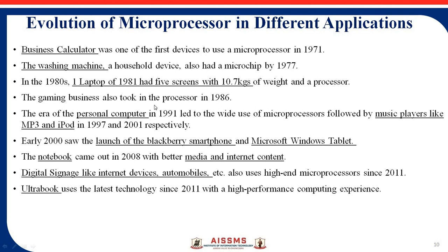These are some different applications of microprocessor. In 1971, the business calculator was one of the first devices where microprocessors were used. In 1977, the washing machine used microprocessors for different functionality. In 1981, the laptop; in 1991, personal computers; then music players, MP3, iPod — every technological device has a microprocessor. Also Blackberry smartphones, window tablets, notebooks, digital signage, internet devices, automobiles, and ultrabooks all support microprocessors. Nowadays, every device like washing machine, camera, microwave oven, and TV uses microprocessors.